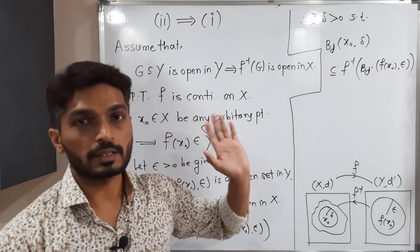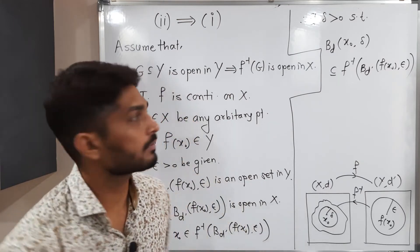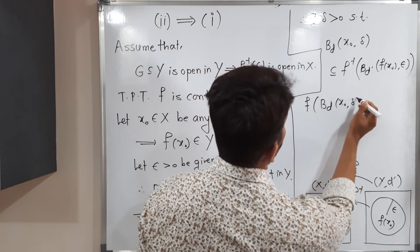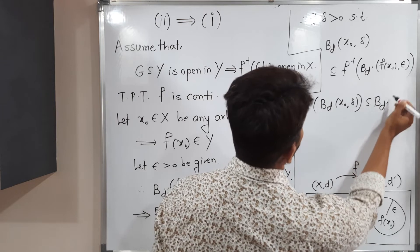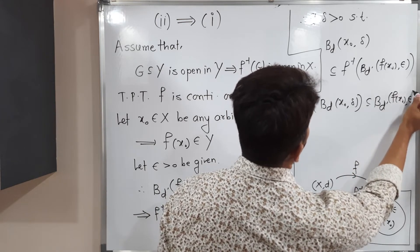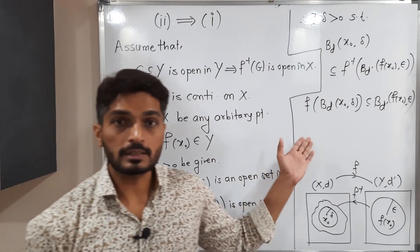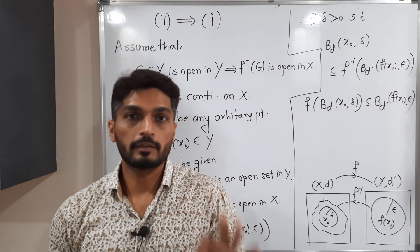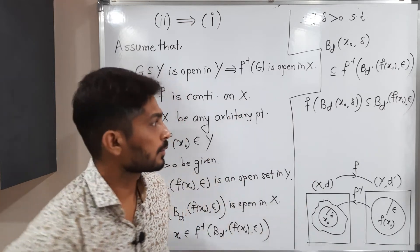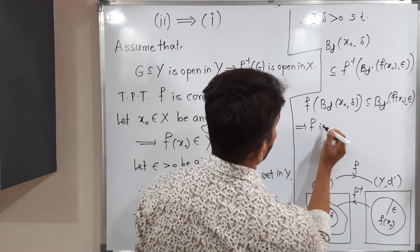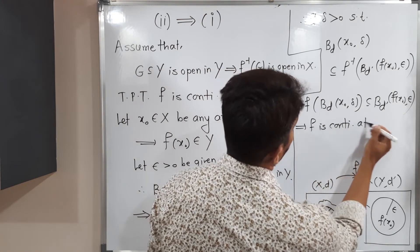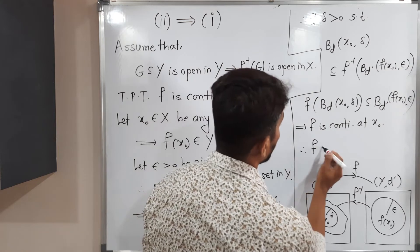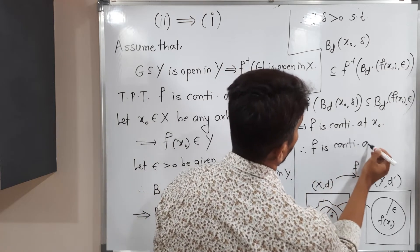Now I am going to shift f inverse to the other side, giving simply f. Therefore f of B(d; x₀, δ) is a subset of B(d'; f(x₀), ε). But this is the definition of a continuous function — we have already seen there are three different ways to write it, and this is one of them. Therefore f is continuous at x₀.